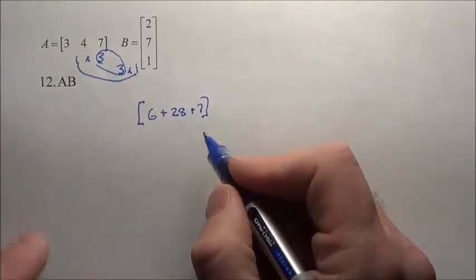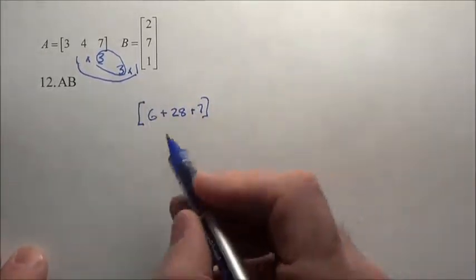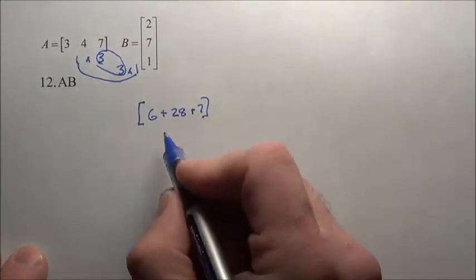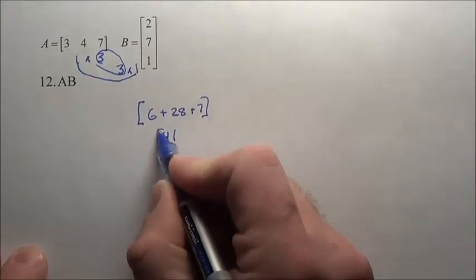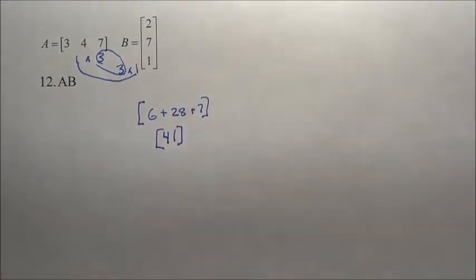That's all one big answer. We're going to end up with a one by one answer. Six and 28 is 34. 34 plus seven, 41. The answer here is simply 41.